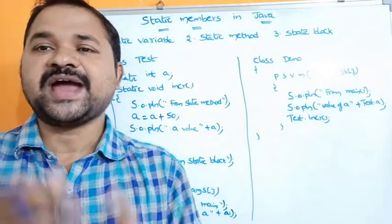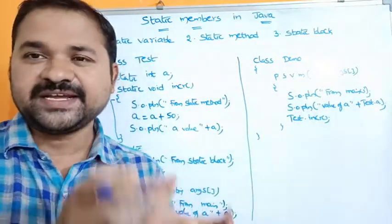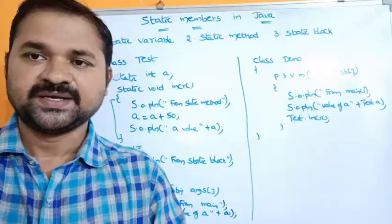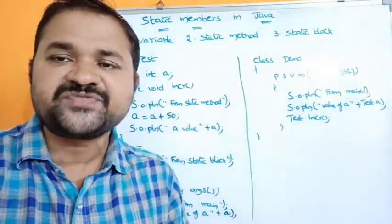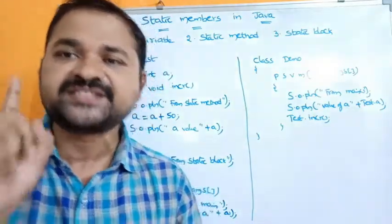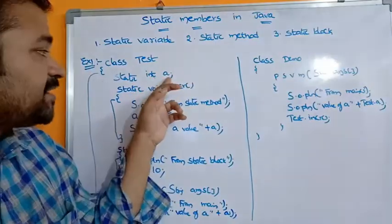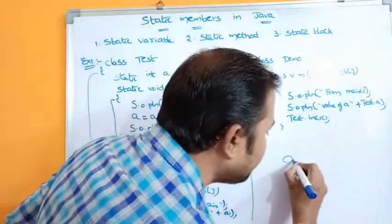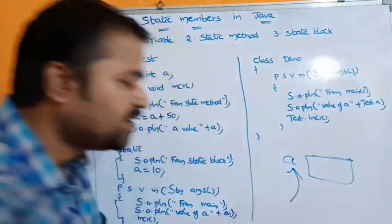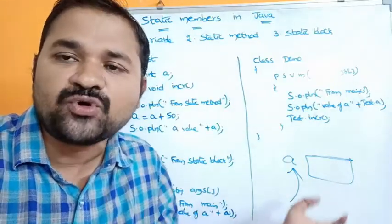During that time the memory will be allocated for the static variables. Static variables are class variables — they are associated with the entire class rather than individual objects. We can create n number of objects: obj1, obj2, obj3. Each object has its own copy of instance variables, but for a static variable the memory will be allocated only once and all the objects of the class will make use of that memory.